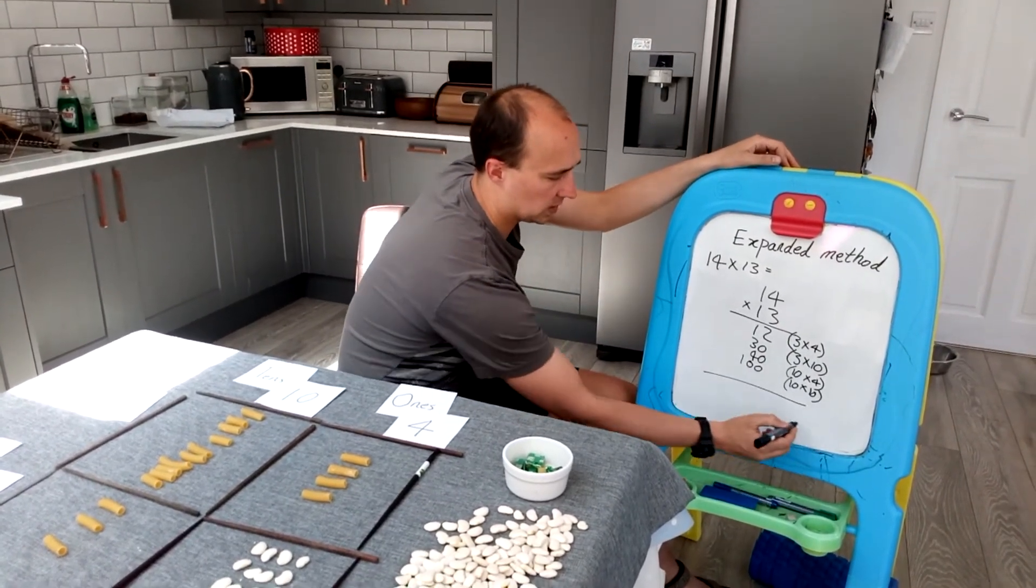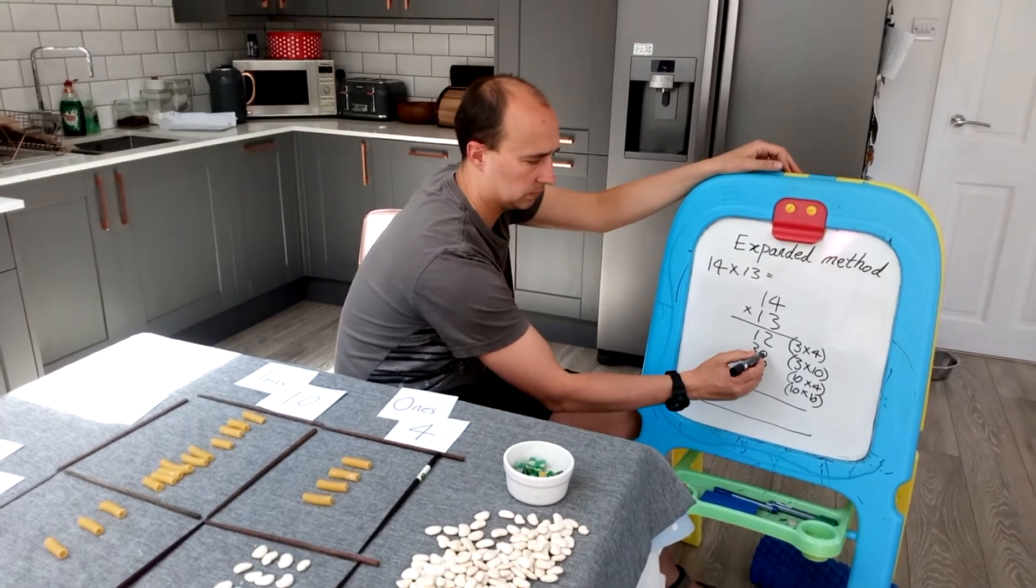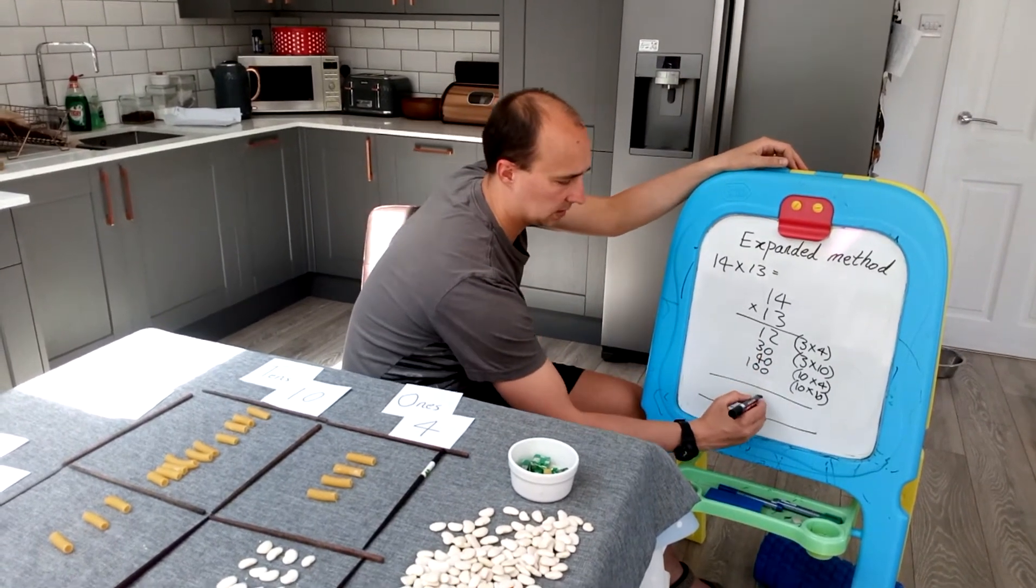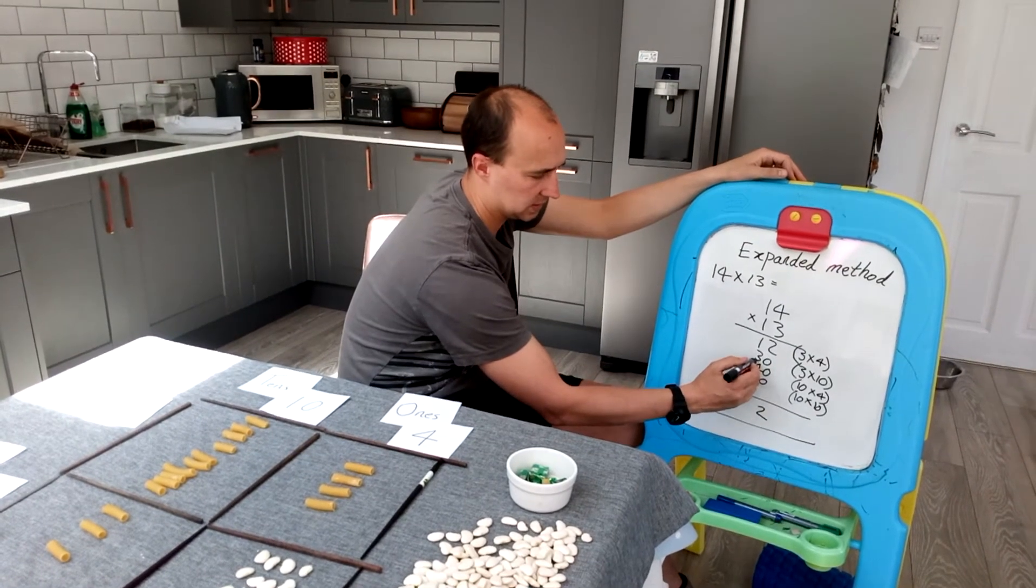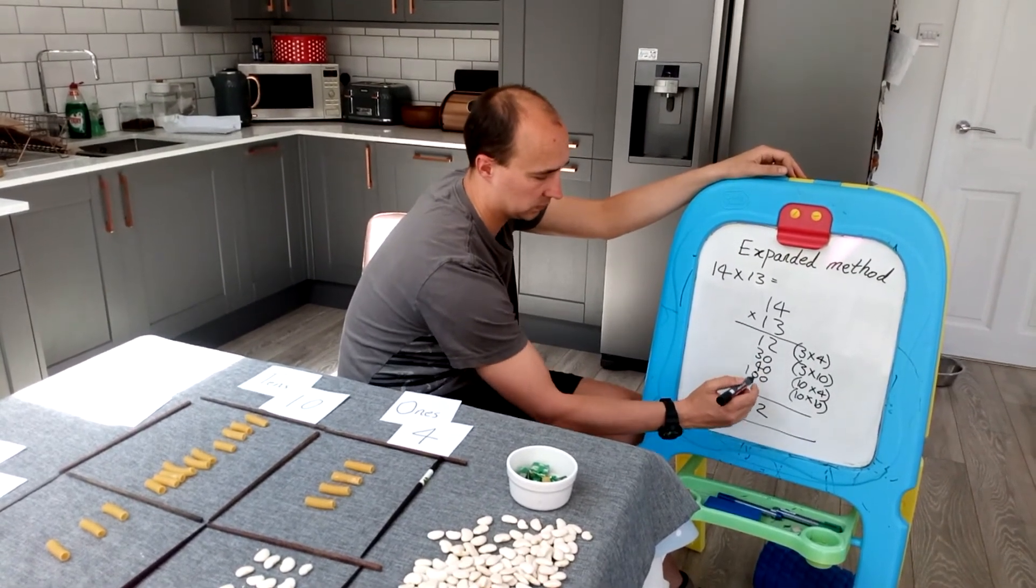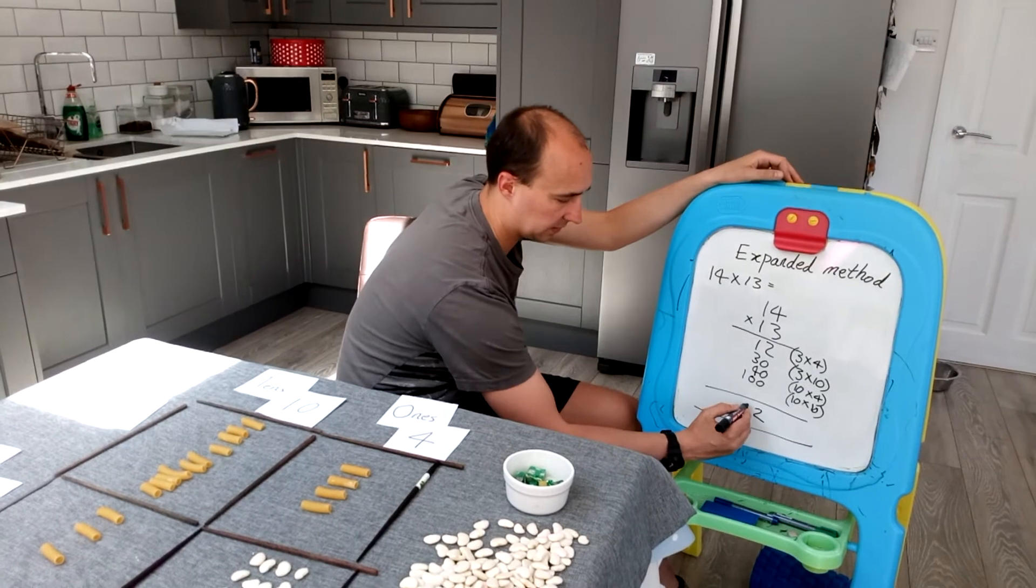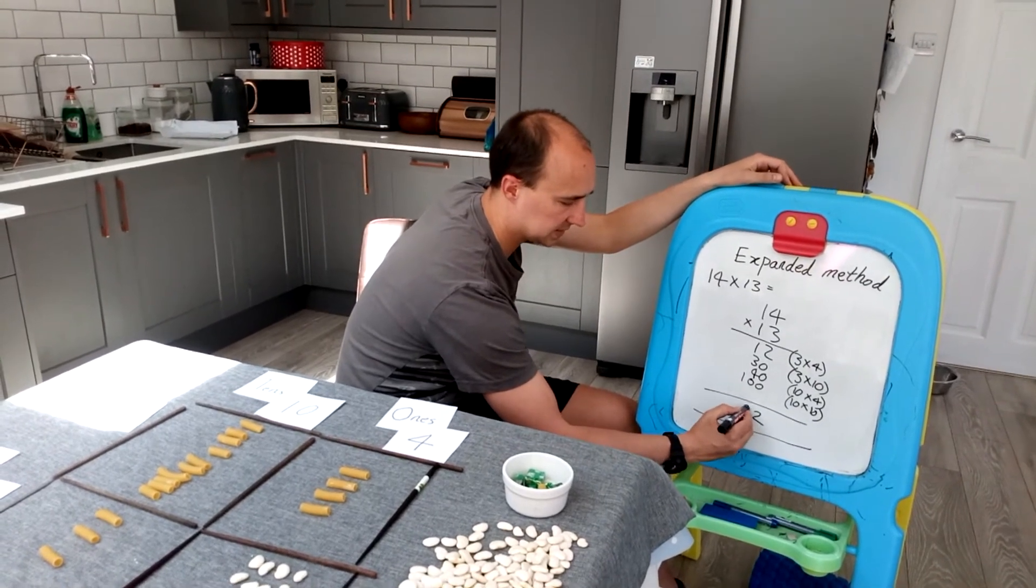So now we're going to add them all up. And I've got 2 plus nothing plus nothing plus nothing is 2. And I've got 10 plus 30, which is 40, plus my 40, which is 80 plus nothing. So 80 in the 10s column.